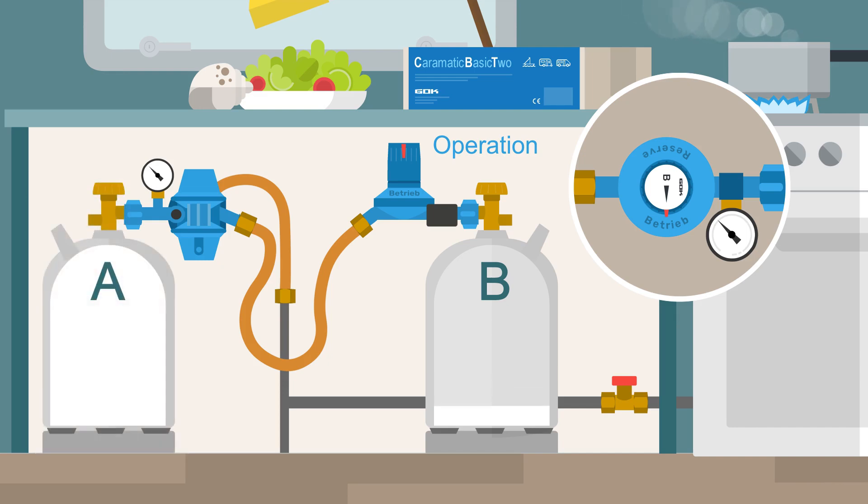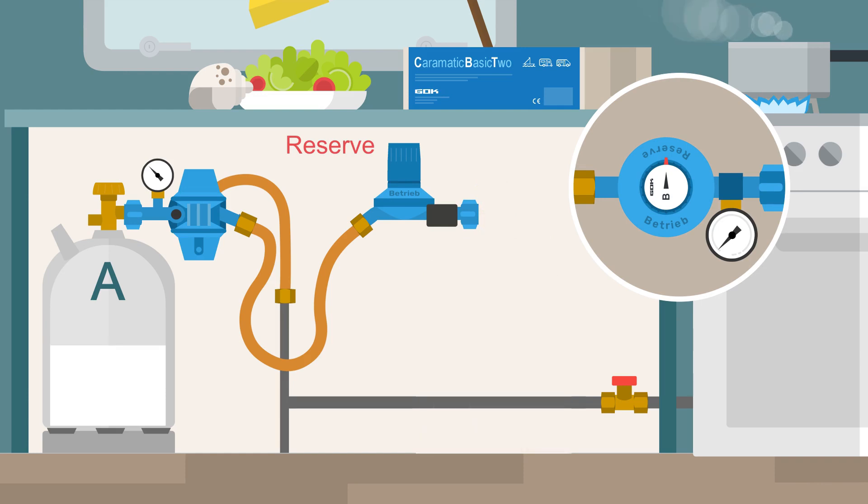Eventually cylinder B will be empty. The system recognizes this automatically and switches back to cylinder A. The operator now has to use the rotary wheel again, from operation to reserve, to change the gas cylinder without interruption of operation.